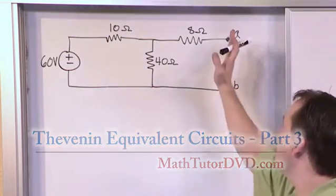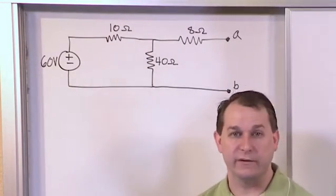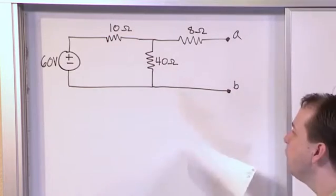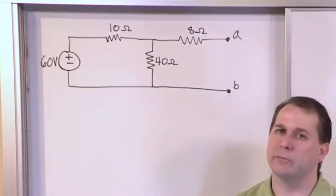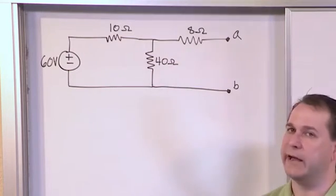So basically we want to model this entire circuit as a single voltage source in series with a single Thevenin equivalent resistance that basically is equivalent to what we have on the board. Now I've chosen a little bit of a simpler problem, even simpler than the last problem I think, because what we're going to do in this case is I'm going to show you how to calculate the Thevenin resistance two different ways.